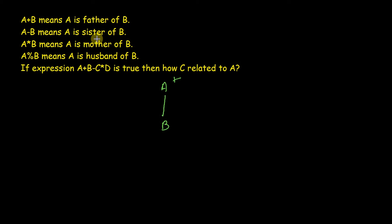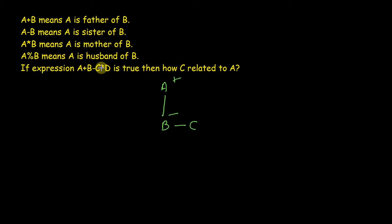C comes in a sibling relation with B, denoted by a single line. We also now know B is female, so we put a minus sign on B. The last part is C × D — since multiply means mother, C is mother of D. D comes here as a child of C, and since C is a mother, we put a minus sign on C.